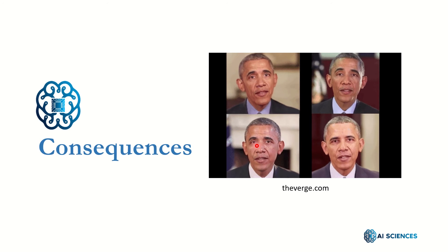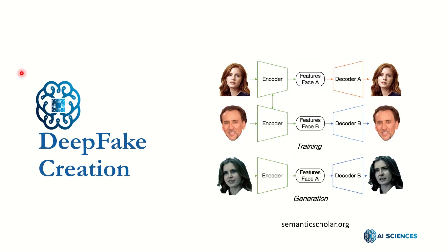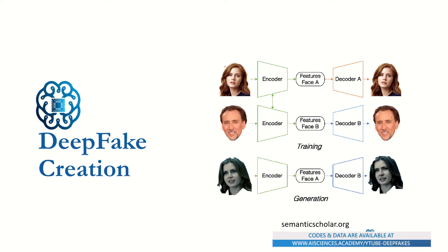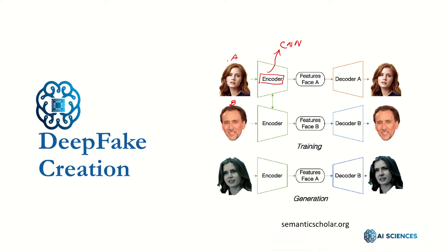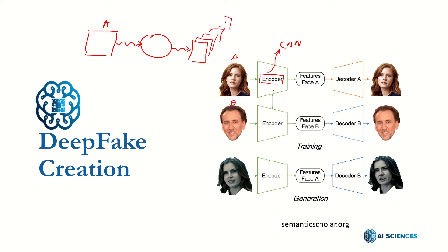Let's now focus on how deepfakes can be created and what the state-of-the-art methods are in this field. What basically happens is: you have a face — let's say face A, this is person A, and person B. You train an encoder model, normally a convolutional neural network model. You train this model and create a feature map of face A. So face A goes through an encoder model, and the encoder model generates a feature map — maybe in matrix, tensor, or vector form.